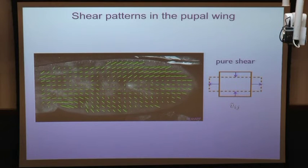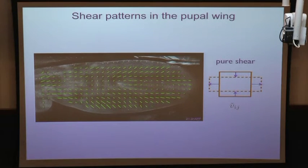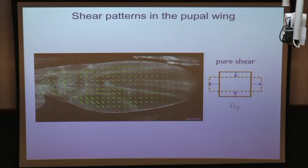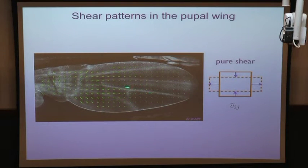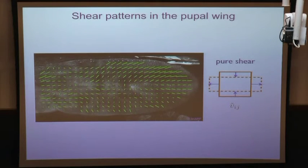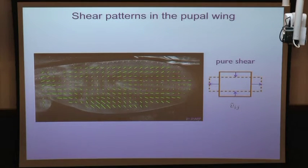The structures that appear at long times along the long axis of the wing are indeed the veins. They form during this process and are made of slightly smaller cells, which is why they appear brighter.